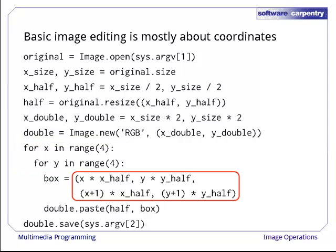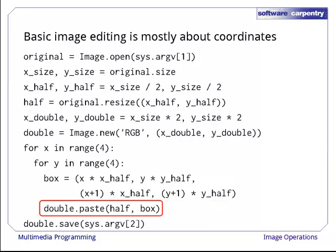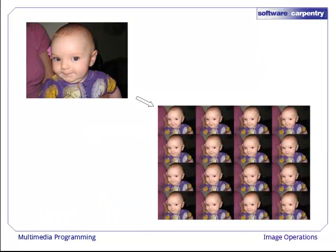Inside the inner loop, it calculates the coordinates of the upper left and lower right corners of a box big enough to hold one copy of the half-sized image. Remember, PIL's coordinate system puts (0,0) in the upper left corner, not the lower left. The inner loop then pastes a copy of the half-sized image into the double-sized image, using the box's coordinates to place it.